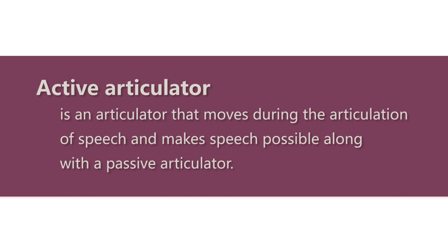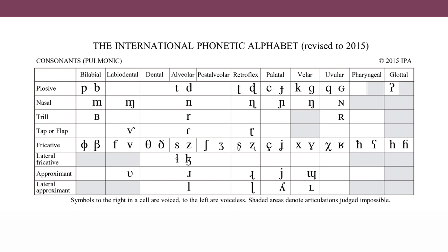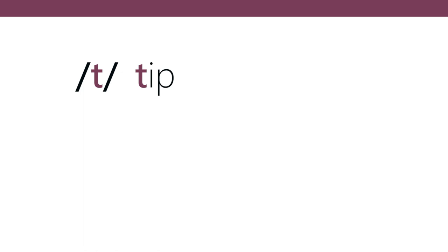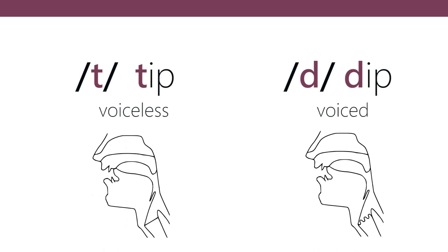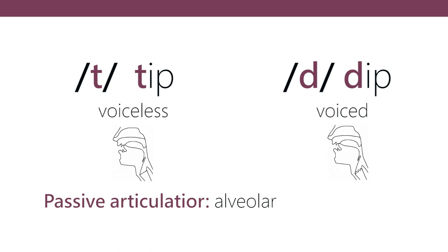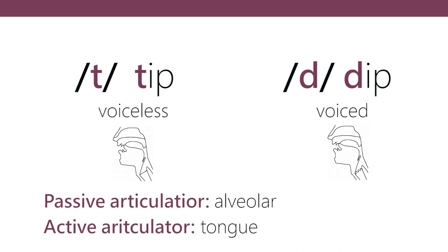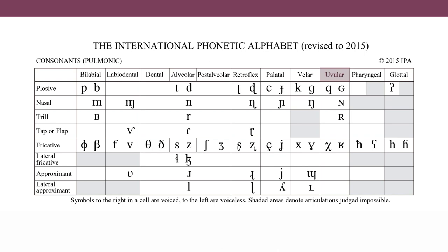You might think active articulators are more important because they move, but if you look at the consonant chart, most of the terms used to refer to different sounds are actually passive articulators. For example, the sounds 't' as in 'tip' and 'd' as in 'dip' are called alveolar plosives — they involve the alveolar ridge, which is a passive articulator because it does not move. The active articulator in this case would be the tongue. The same applies to dental, palatal, velar, and uvular sounds. It's as important to know the passive articulators as the active ones.